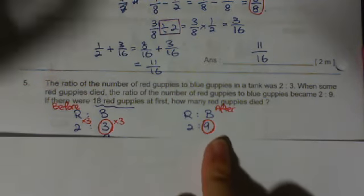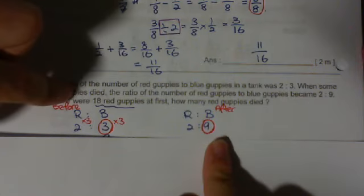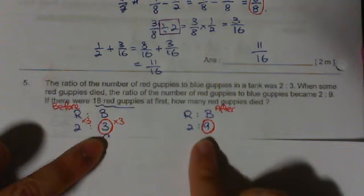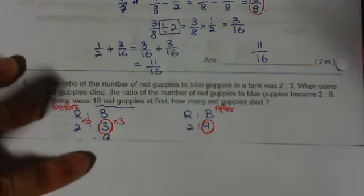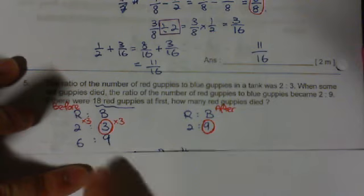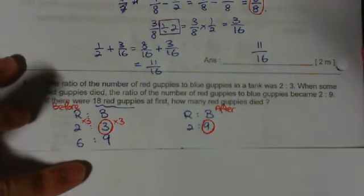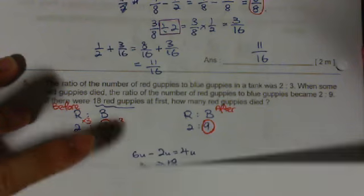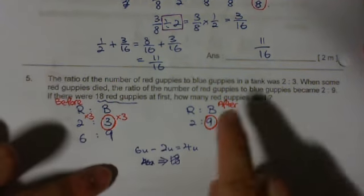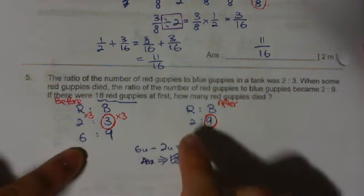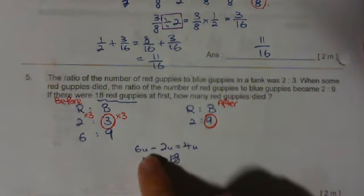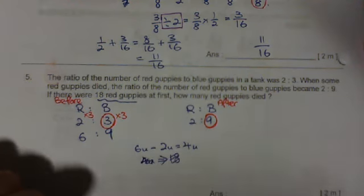Now, something did not change in this question. The blue guppies did not change. The blue guppies remained the same throughout. So I have to make the blue guppies units the same. So 3 can become 9 times 3. So the whole ratio, I multiply it out and I'll get this. Next. I know that I am trying to find how many guppies died and the change was from 6 units to 2 units. So 6 units minus 2 units equals 4 units.